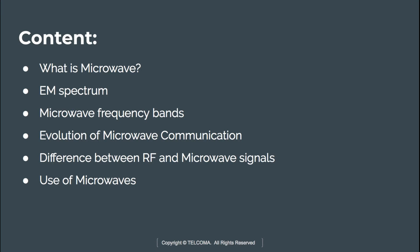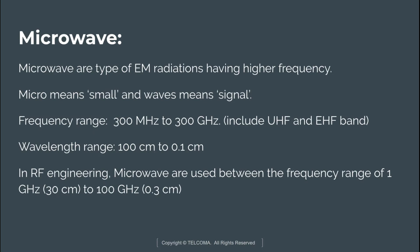Starting with the first topic: what is microwave? Microwaves refer to electromagnetic waves having frequencies higher than 1 GHz, lying in the range of 1 GHz to 200 GHz. The word 'micro' means small and 'wave' means signal. The frequency range spans from 300 MHz to 300 GHz, which includes the ultra-high frequency and extremely high frequency bands.